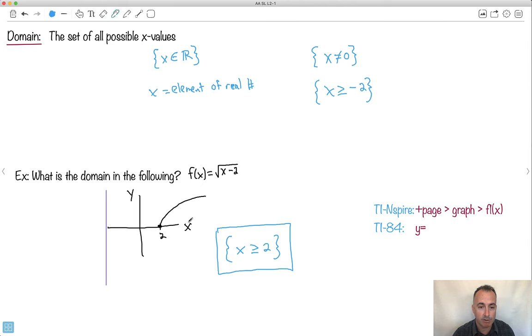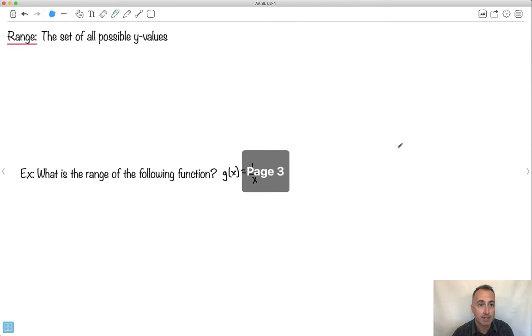So domain, I scan left to right to look for the answer. If I want to do range, it's just the y value. So same idea. You could have, for example, y is an element of real numbers. You could have y can't be 1. There's lots of different examples.